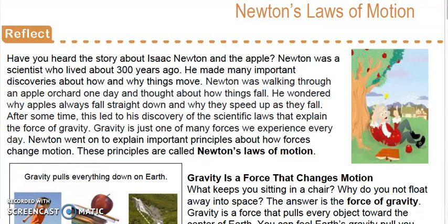Have you ever heard the story about Isaac Newton and the apple? Newton was a scientist who lived about 300 years ago. He made many important discoveries about how and why things move. Newton was walking through an apple orchard one day and thought about how things fall. He wondered why apples fall straight down and why they speed up as they fall. This led to his discovery of the scientific laws that explain the force of gravity. Newton went on to explain important principles about how forces change motion. These principles are called Newton's Laws of Motion.